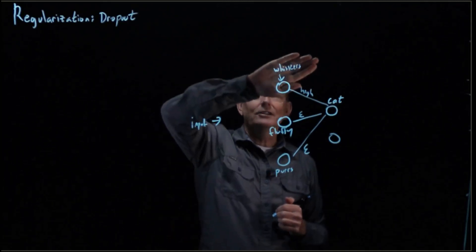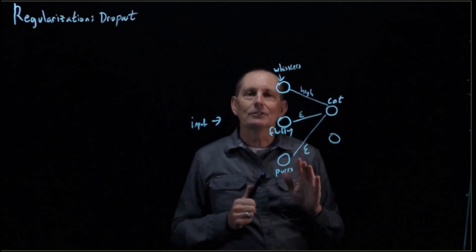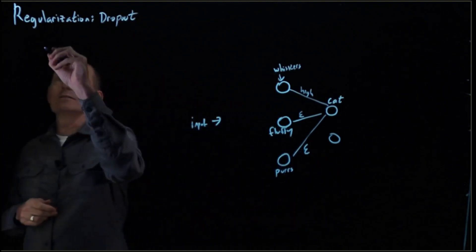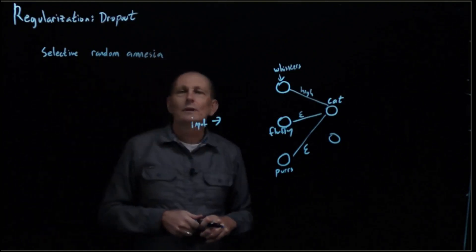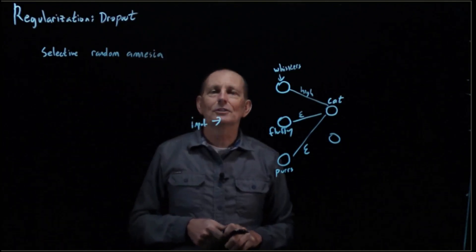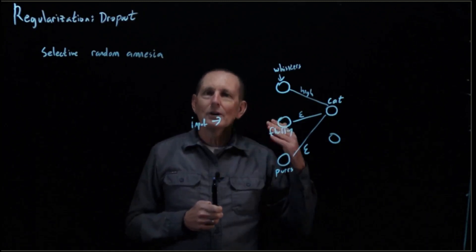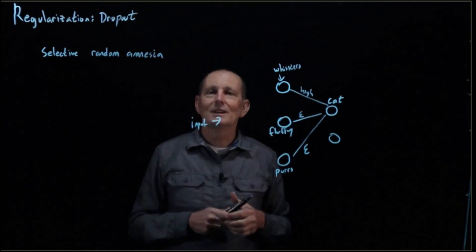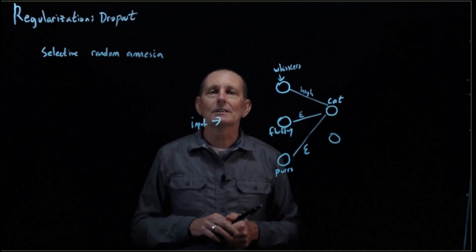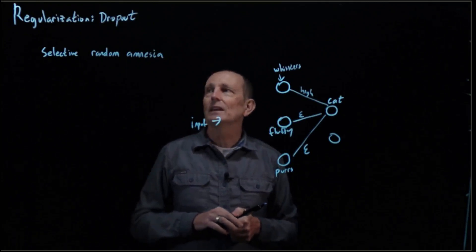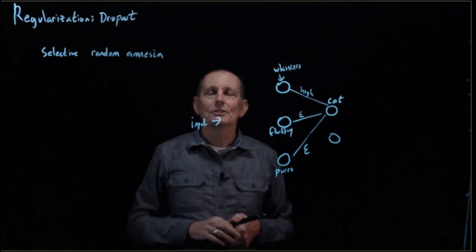Instead, it's going to have to look at finer-grained information. So that is kind of the idea of dropout — let's just call it selective random amnesia. We also learn from the fact that if you become blind, you're going to be more reliant on your hearing and better able to hear things and get information from your surroundings. So we will just block out certain nodes during training.